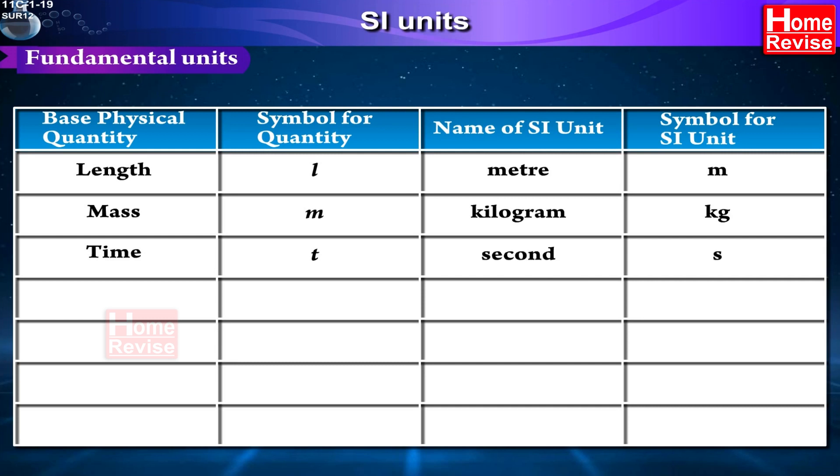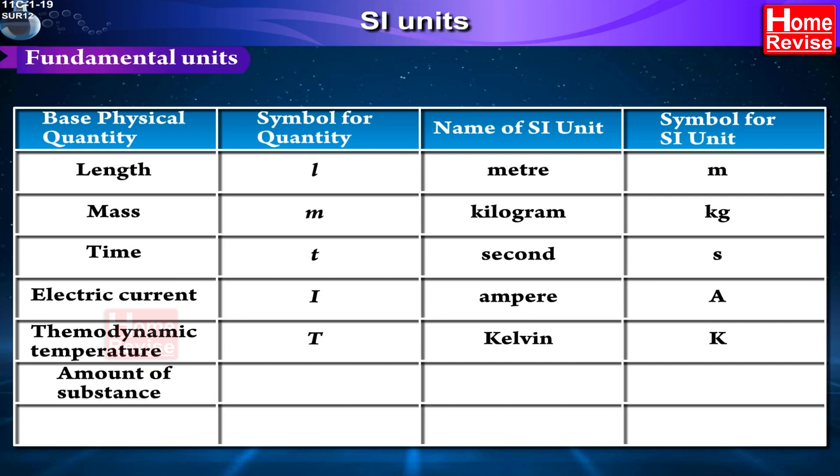Base physical quantity: Time, Symbol for quantity: T, Name of SI unit: Second, Symbol for SI unit: S. Base physical quantity: Electric current, Symbol for quantity: I, Name of SI unit: Ampere, Symbol for SI unit: A. Base physical quantity: Thermodynamic temperature, Symbol for quantity: T, Name of SI unit: Kelvin, Symbol for SI unit: K.